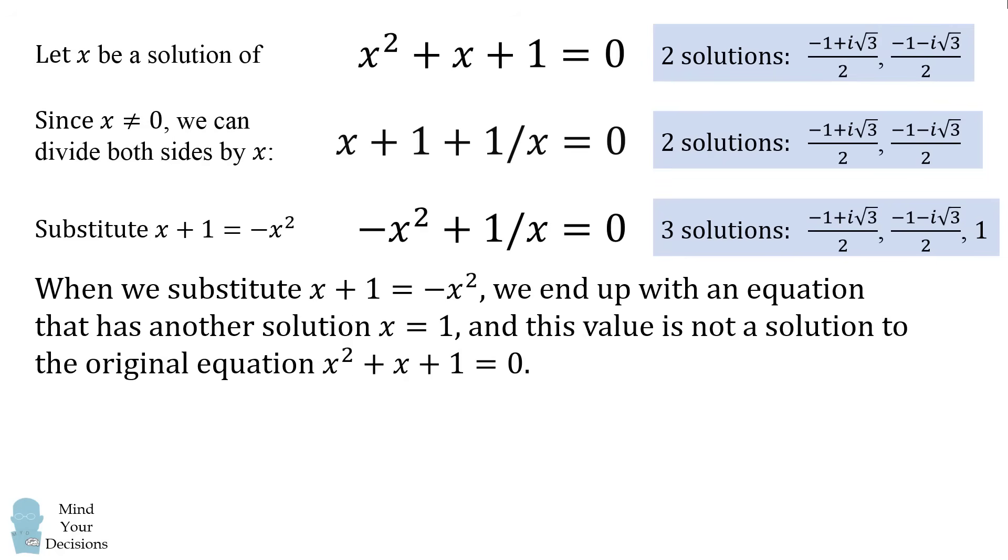So the lesson is that when we've substituted x + 1 = -x², we've got an equation that has another solution, and this is not a solution to the original equation x² + x + 1 = 0.